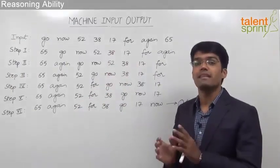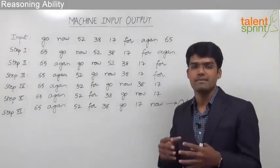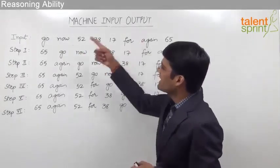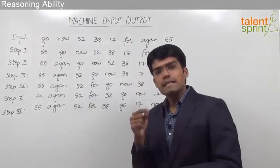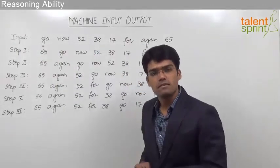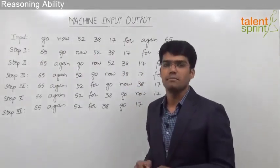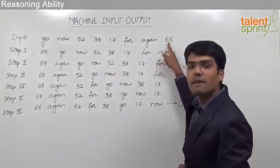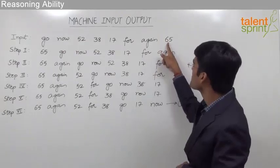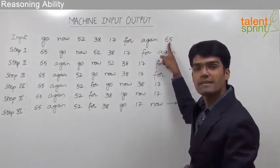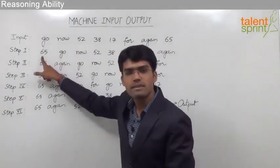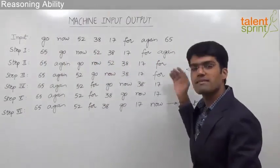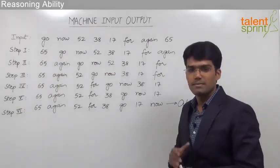Now that we have understood the logic behind the last step, let us look at the step-by-step procedure to understand the movement of words and numbers. From the given input, we know that the first position should be occupied by the highest number, which is 65. So 65 is brought from the last position to the first position in step 1.